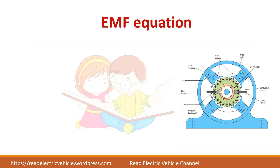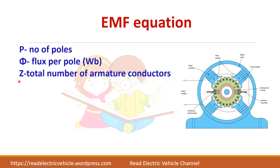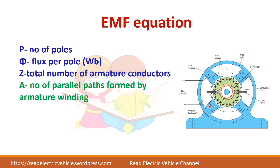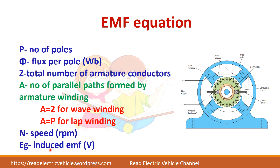Now let us derive the EMF equation of the DC generator. Here we have P as the number of poles — this north and south represents the poles. Phi is the flux produced per pole and its unit is in Webers. Z is the total number of armature conductors. A is the number of parallel paths formed by the armature winding. The number of parallel paths will be equal to 2 for wave winding and equal to P for lap winding. N is the speed given in RPM and EG is the EMF induced.